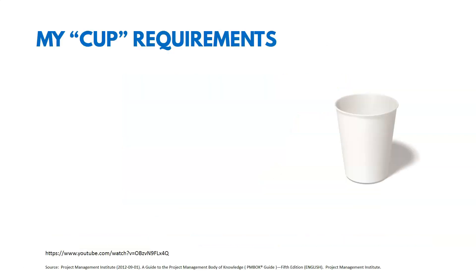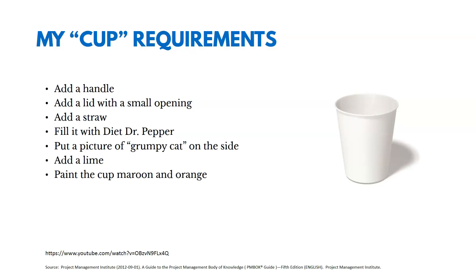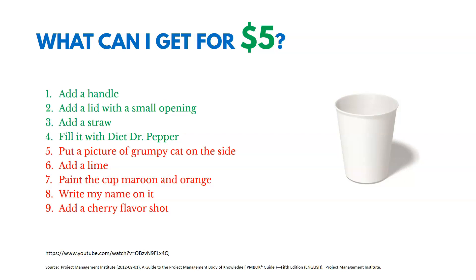Imagine requirements for a cup: add a handle, add a lid with a small opening, add a straw, fill it with Dr. Pepper, put a picture of Grumpy Cat on the side, and so on. The question is — what can I get accomplished for $5? So what would the scope be on a $5 project? Maybe it's just the first four items. We're taking those requirements, collecting them, and then we've got to determine and define our scope.